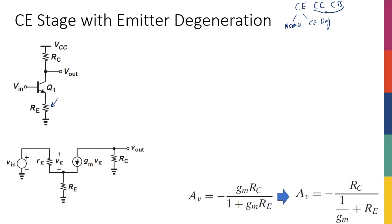The first stage of analysis is the same as everything else we've done: we draw the small signal model. The circuit is pretty much similar to what we had before. For simplicity, I've ignored r_naught for now — we'll talk about its effect later. The difference is that at the emitter terminal, I now have a resistor Re to ground.